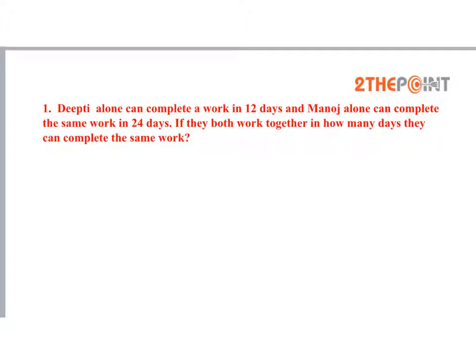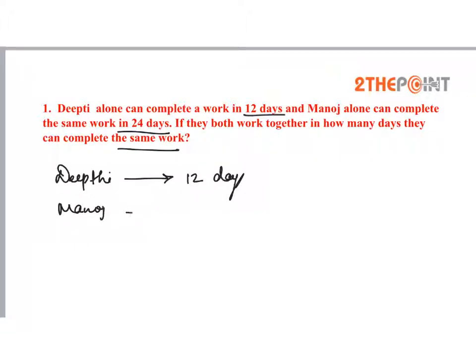Deepthi alone can complete a work in 12 days and Manoj alone can complete the same work in 24 days. If they both work together, in how many days can they complete the same work? Deepthi completes the work in 12 days and Manoj in 24 days. To find the total work, take the LCM of 12 and 24, which is 24. So 24 units is the total work.